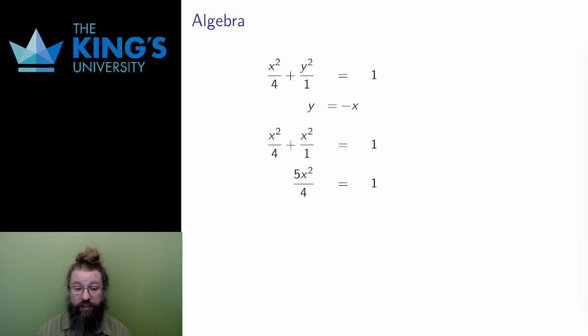Now that I know the values for x, I can use the original equation of the line, y equals negative x, to find the matching values for y. Each x value leads to a y value this way, one of opposite sign, and in this way I have calculated the two intersection points.